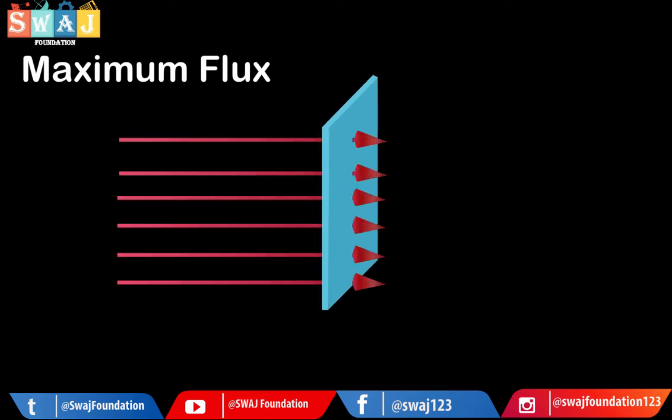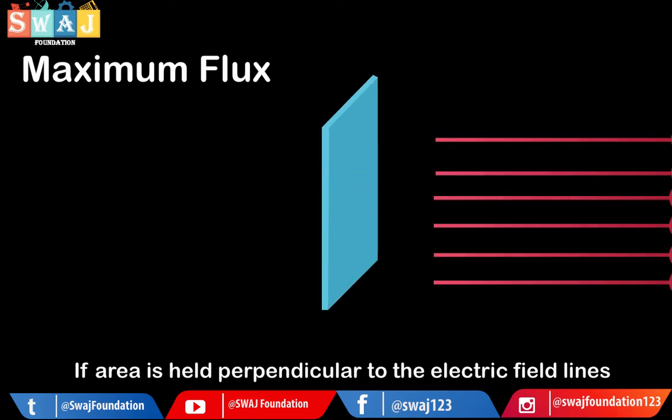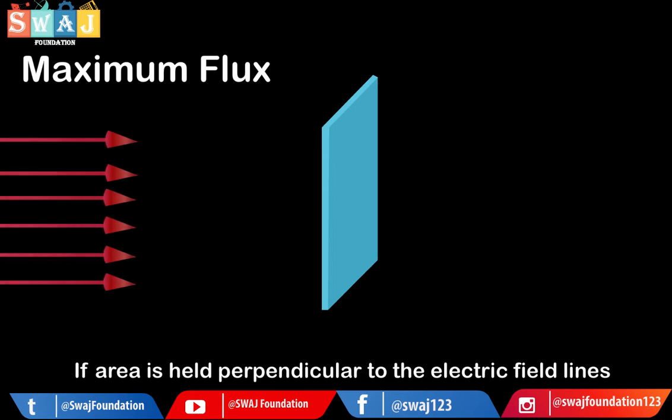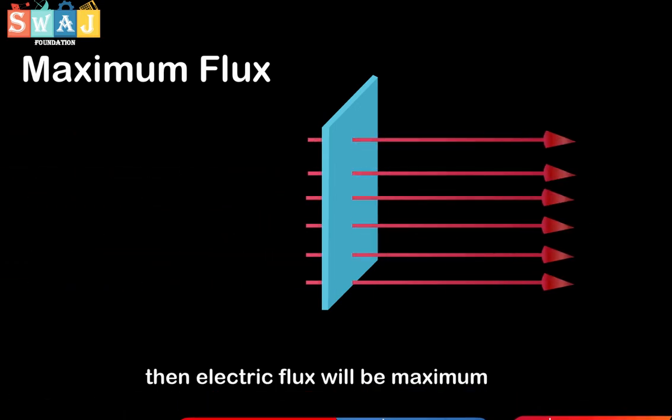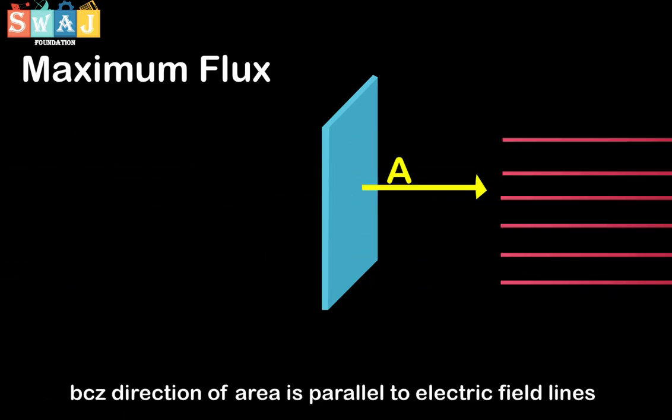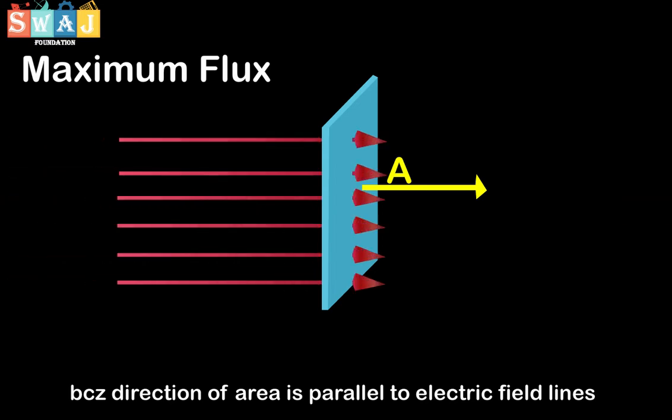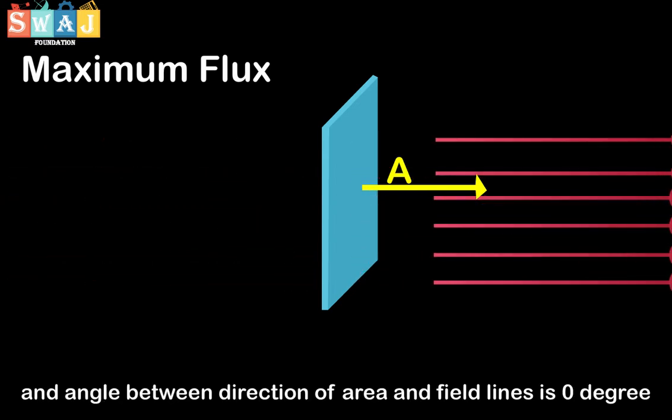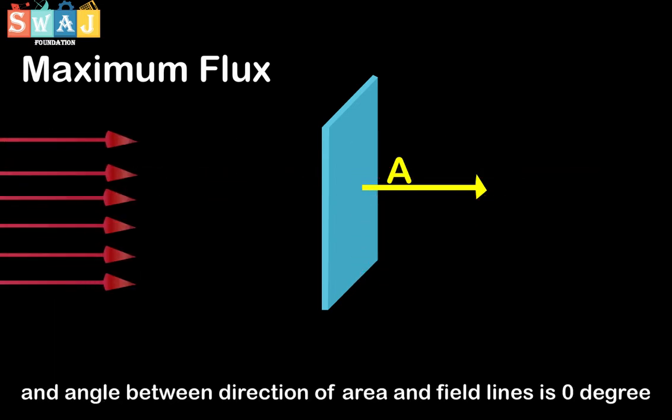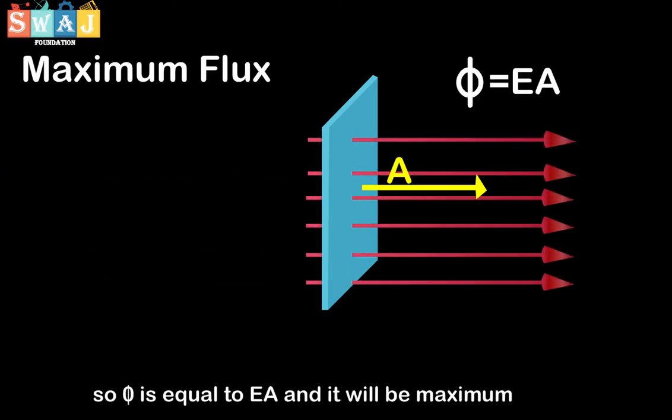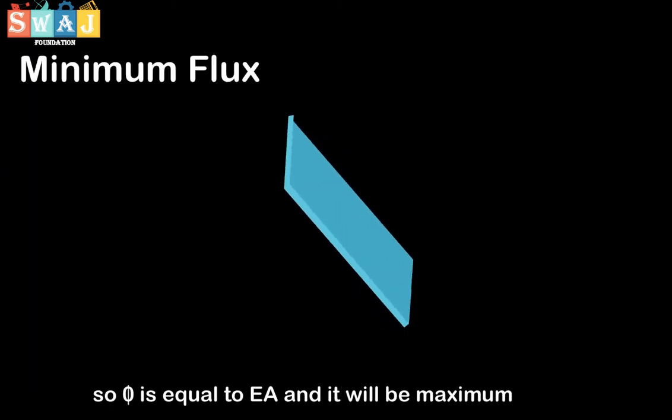Maximum flux. If area is held perpendicular to the electric field lines, then electric flux will be maximum because direction of area is parallel to field lines and angle between direction of area and field lines is zero degree. So Phi is equal to EA and it will be maximum.